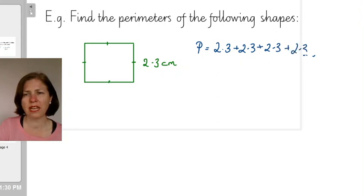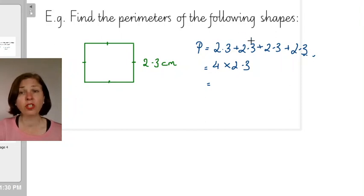So I can do it this way 2.3 plus 2.3 plus 2.3 plus 2.3 but what you can probably see is that that's actually the same as 4 times 2.3. So I'm going to do that calculation, or you can do it this way and you might actually find that easier.